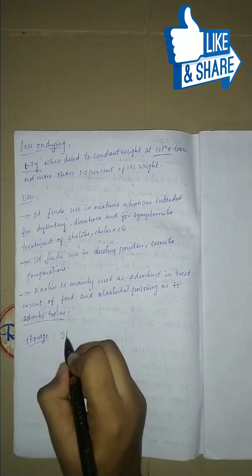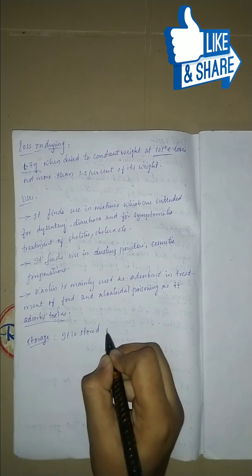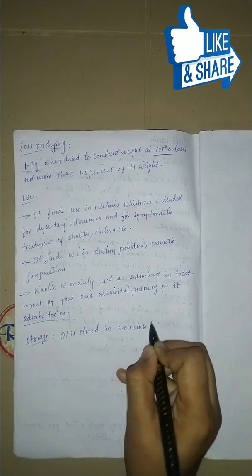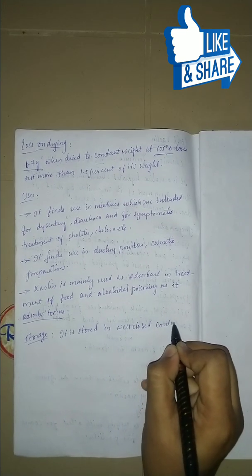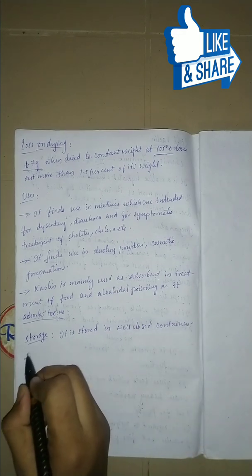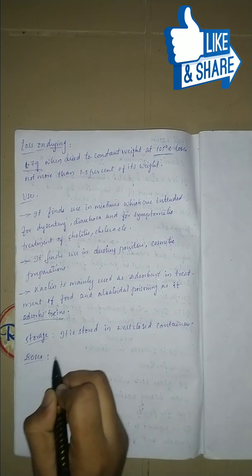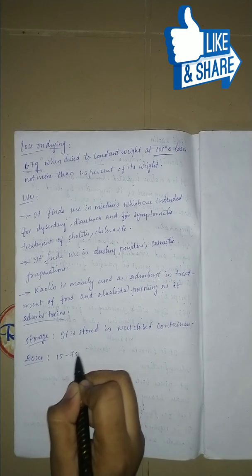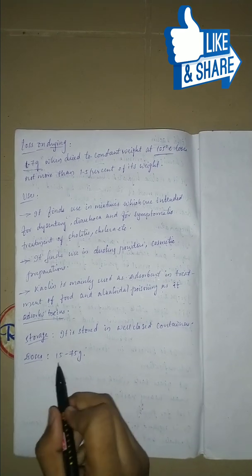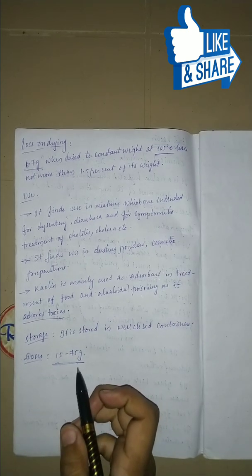It is stored in well-closed containers. The dose of light kaolin is 15 to 75 grams. That's all guys, in the next video we will discuss about another topic.